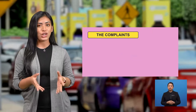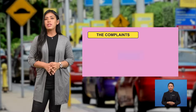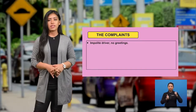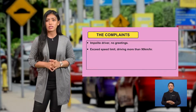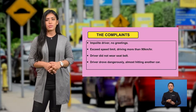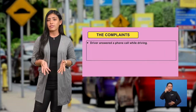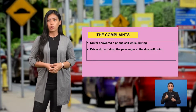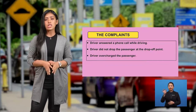Let us take a look at her complaints. Impolite driver — did not greet her. Speeding above speed limit — speed limit was 90 kilometers per hour. Did not wear a seat belt. Overtaking dangerously — almost hit another moving car. Talking on the phone while driving. Did not drop her at the drop-off point. Overcharged — original price was 18 ringgit; charged more for toll.